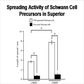In terms of spreading activity after injection, the open boxes represent Schwann cell precursors and the black boxes represent Schwann cells. At one month and beyond two months, there is a much higher level of spreading from the Schwann cell precursors compared to normal Schwann cells.